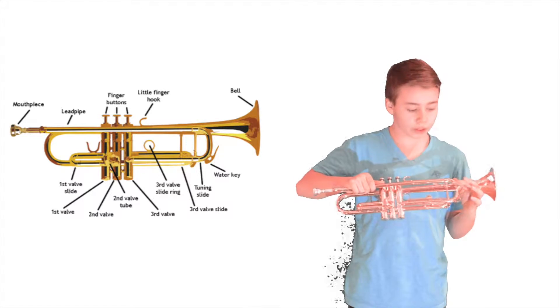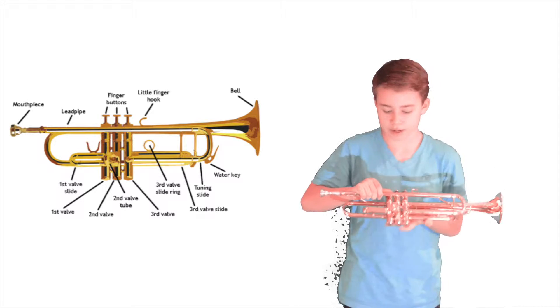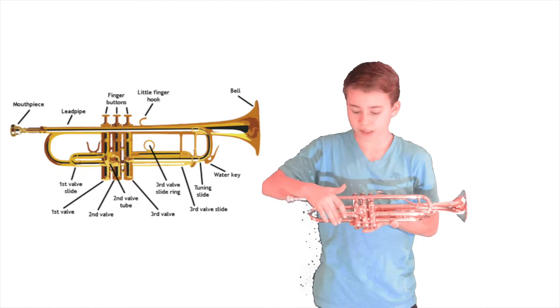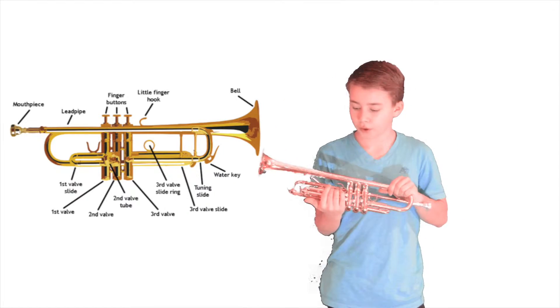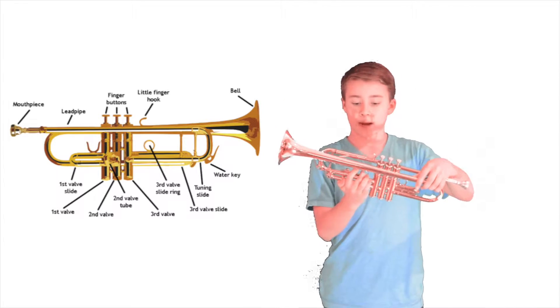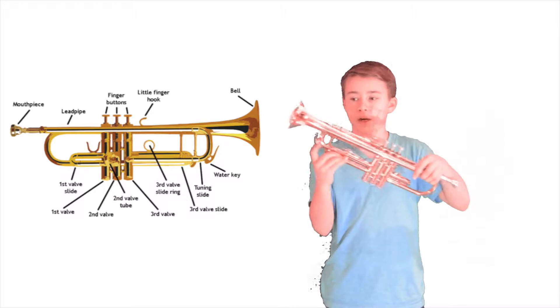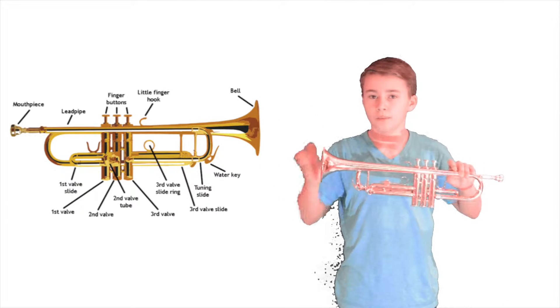Then we have our tuning slide and the tuning slide water key. We have our first valve slide and the first valve saddle. We have our second valve. Back here, we have our third valve slide with the ring and our water key. Finally, we have the bell.